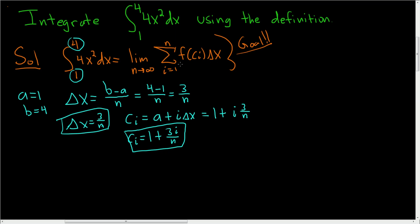But we not only need c sub i, we need f of c sub i. So let's work that out. So f of 1 plus 3i over n. And you might say, well, what's f? f is your integrand. So in this problem, f of x is equal to 4x squared.